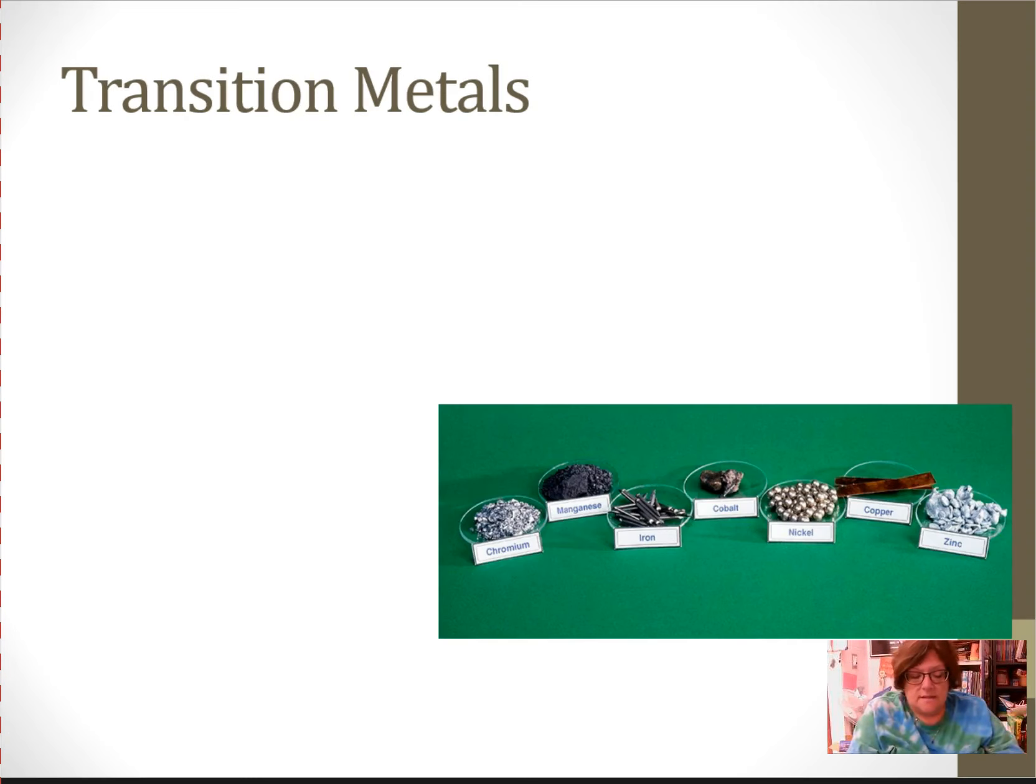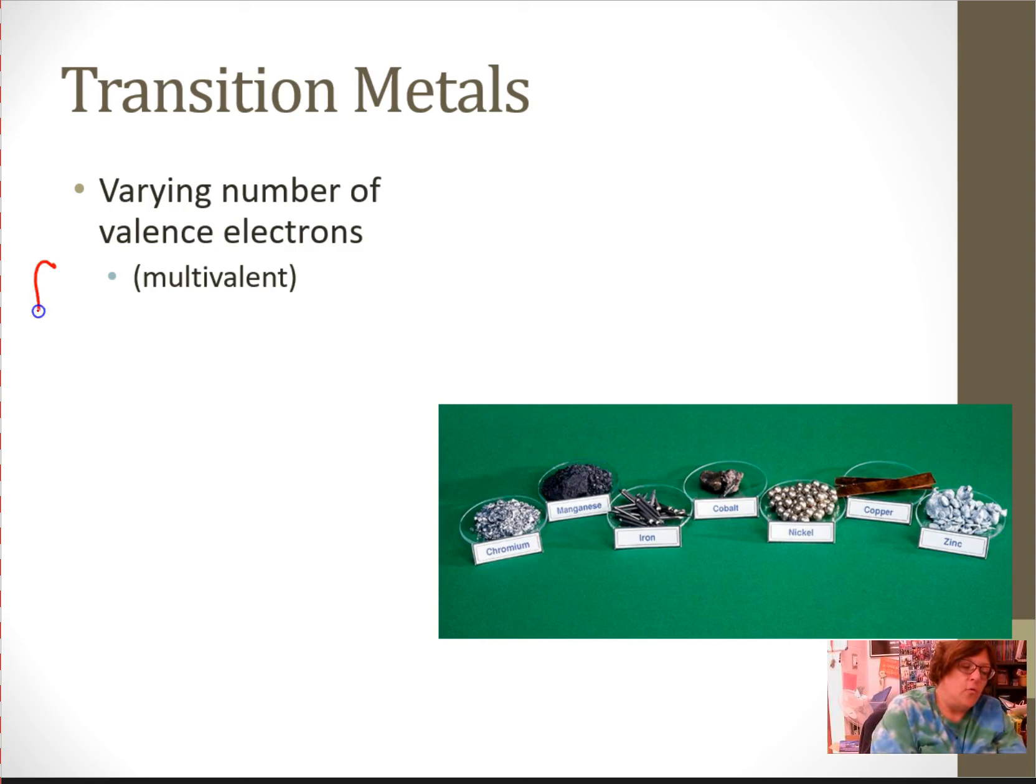Transition metals is the next thing on your sheet. The transition metals have varying number of valence electrons, which means they're multivalent. Your sheet says form multivalent cations, meaning more than one positive cation. For instance, iron can be a plus 2 or a plus 3. Vanadium can be a plus 2, a plus 3, a plus 4, or a plus 5. So they form multiple cations.